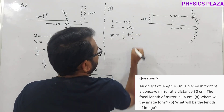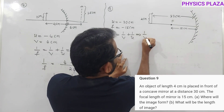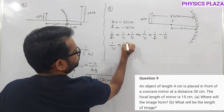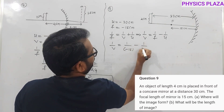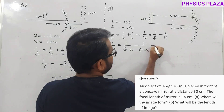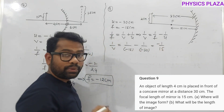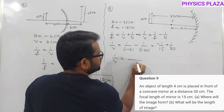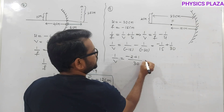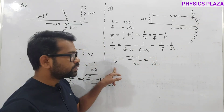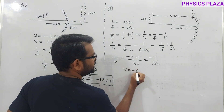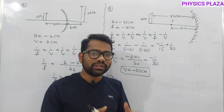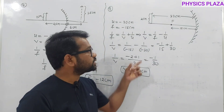Using 1/v = 1/f − 1/u: 1/v = 1/(−15) − 1/(−30) = −1/15 + 1/30. LCM is 30: 1/v = −2/30 + 1/30 = −1/30. Therefore v = −30 centimeters. This confirms the image is formed at the same distance as the object — at the center of curvature. It is a real image (negative v).